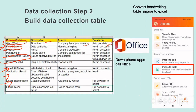Another tip: if your data is handwritten, you can download a phone app called Office Lens, available in the Play Store, that is able to convert a handwriting image into a table in Excel format. Therefore, you don't have to manually key in every piece of data that is in handwritten format.